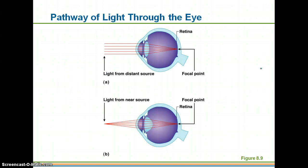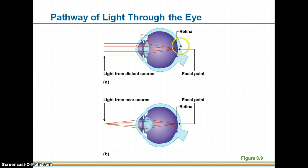It does that with the help of the ciliary muscles in the ciliary body. In this top picture, you're looking at light coming through the cornea and the pupil, and the light is going to be refracted — bent — so that it comes to a focal point on the retina. If you're trying to focus on something closer, the lens has to change shape, which we call accommodation. If it doesn't change shape enough, the focal point isn't going to land on the retina and it won't appear sharp.